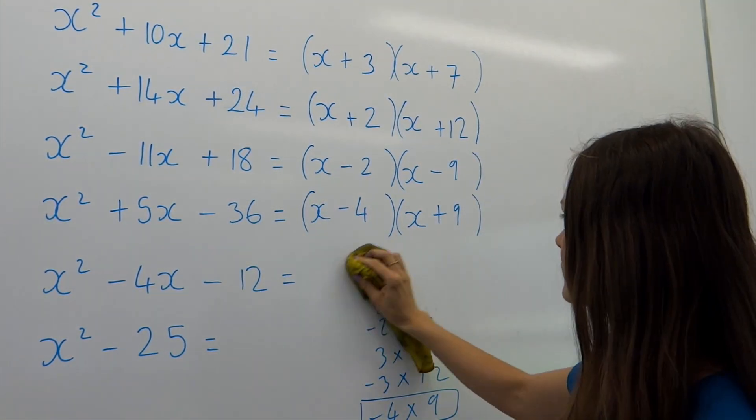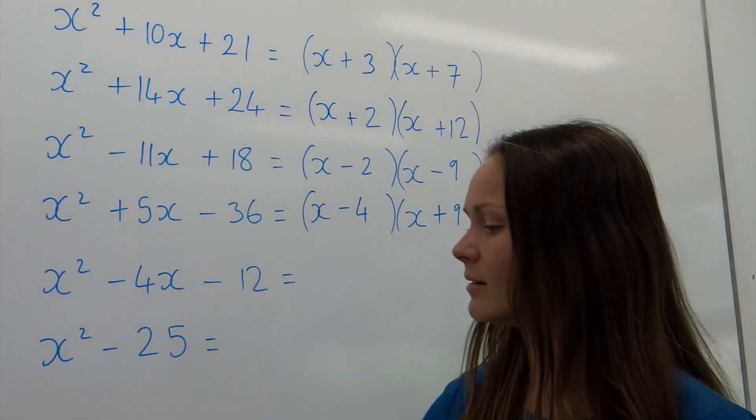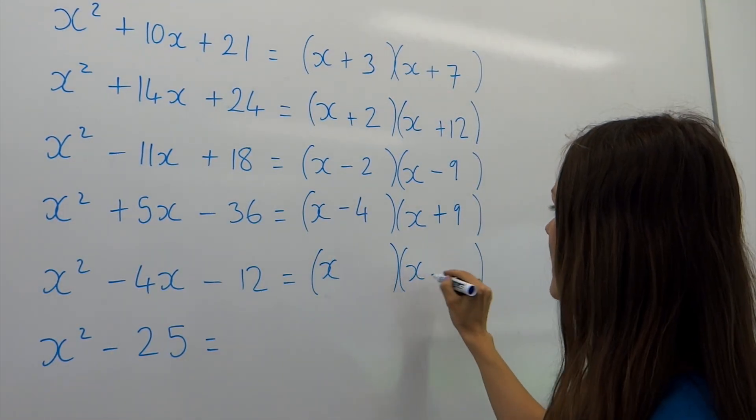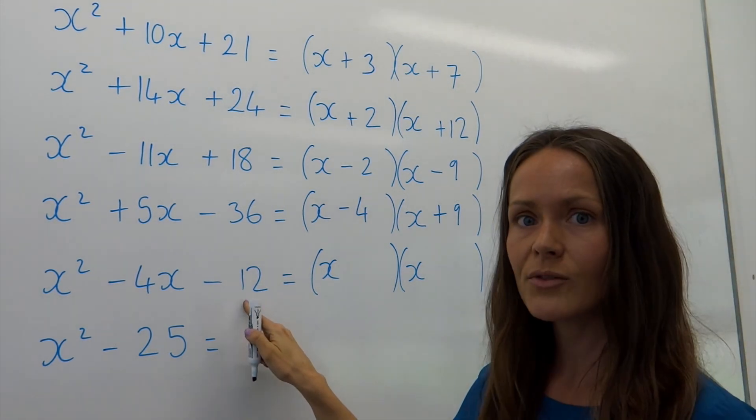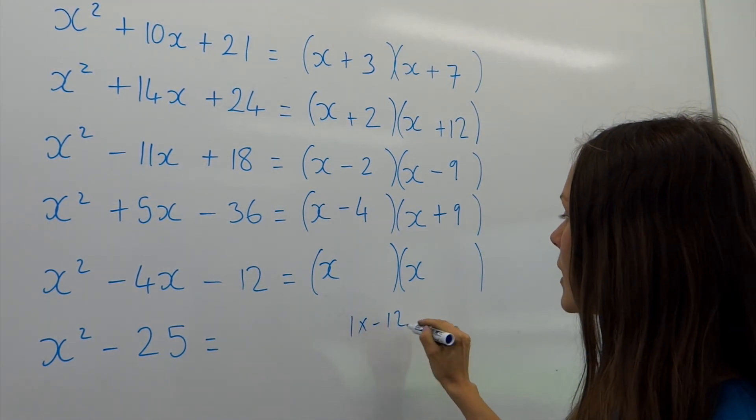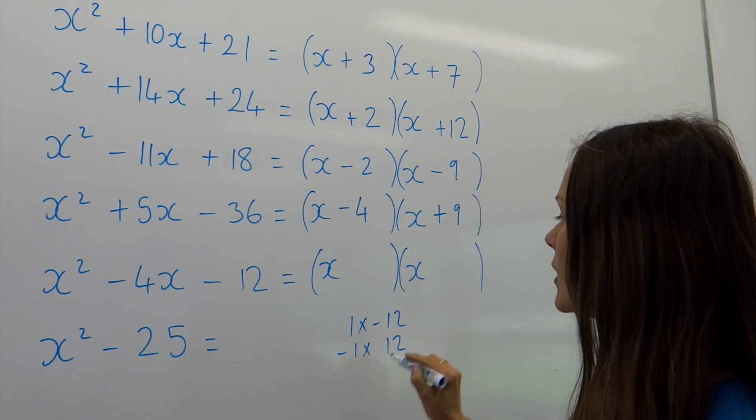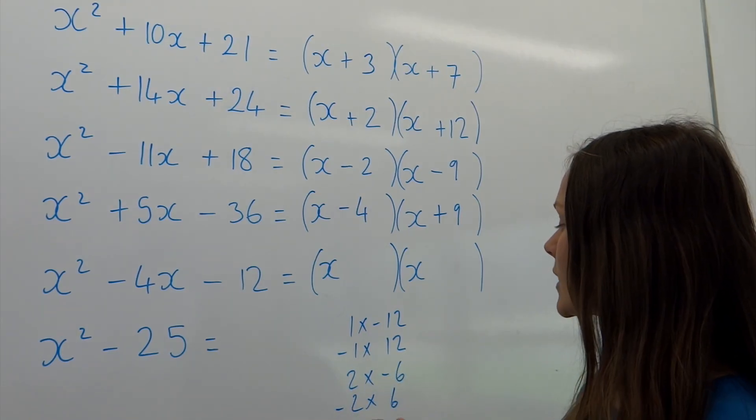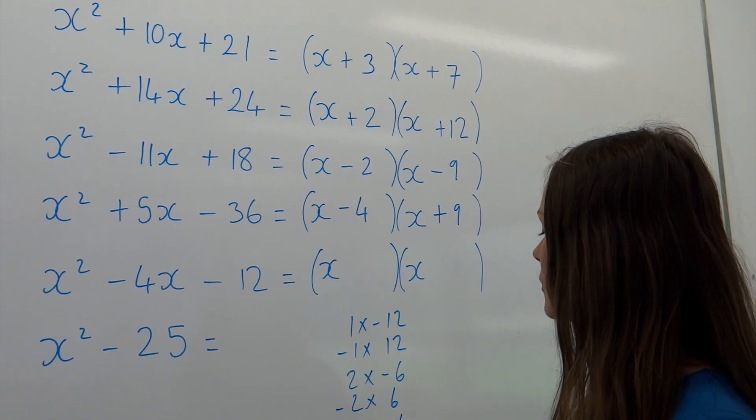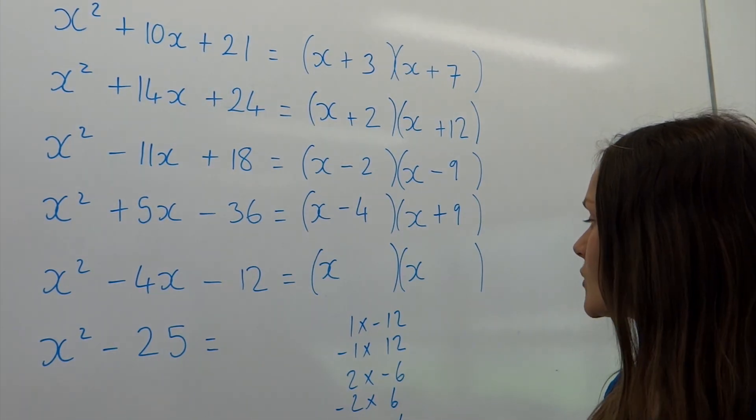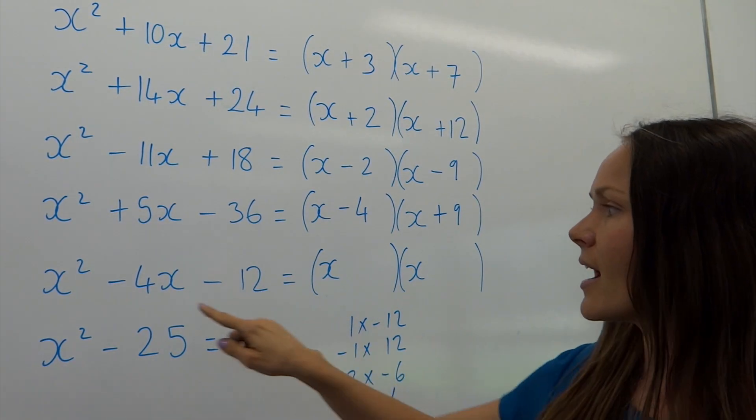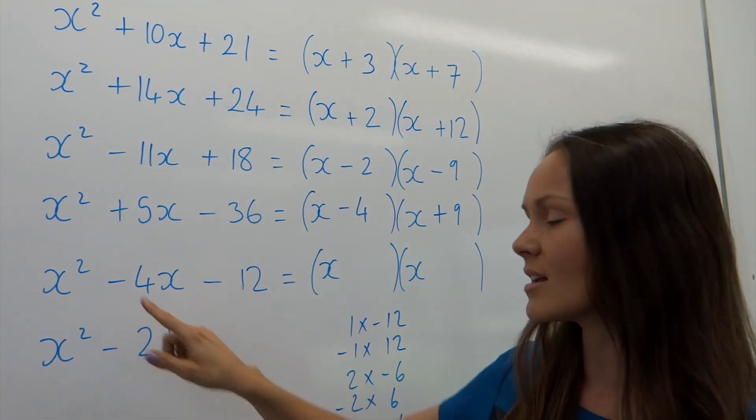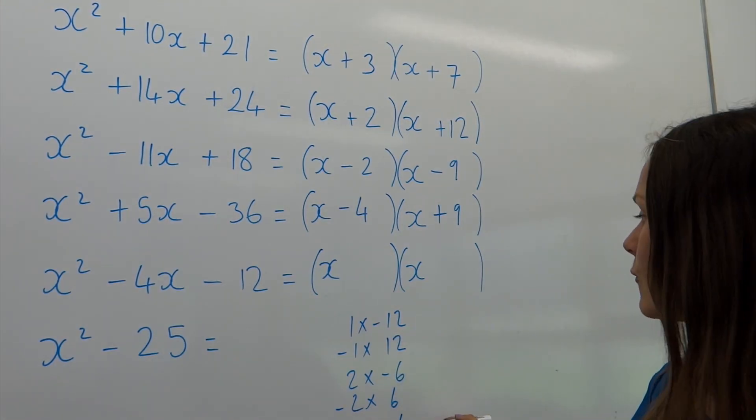All right, now, next one. So again, a double set of brackets, fill in your x values. Now, factors of negative 12. So you could have 1 times minus 12 or minus 1 times 12, 2 times minus 6 or minus 2 times 6, or you could have 3 times minus 4 or minus 3 times 4. So which pair add to give negative 4? Remember, the sign is important. Don't ignore the sign. So which ones add to give negative 4? It must be this pair here.